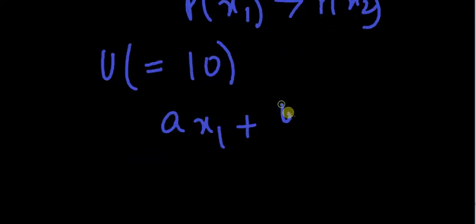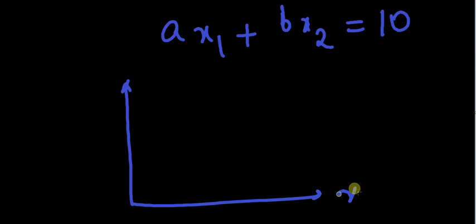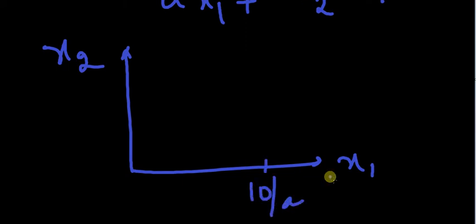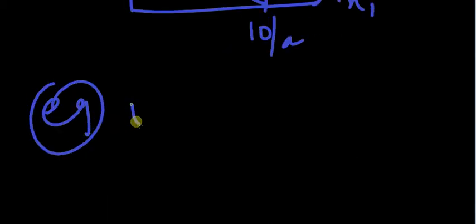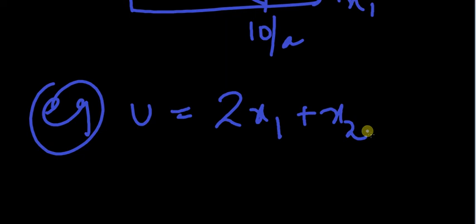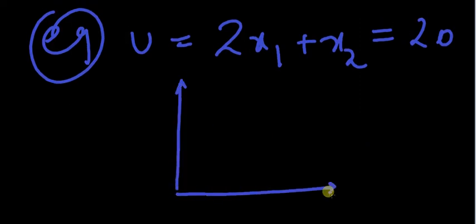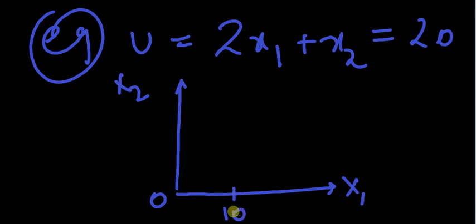Now let's talk about the shape of the indifference curve. Suppose utility is fixed at 10, so ax1 plus bx2 equals 10. Put x2 equal to 0, you get x1 equals 10 by a; put x1 equal to 0, x2 equals 10 by b. For example, with utility function 2x1 plus x2 fixed at 20: when x2 is 0, x1 is 10, and when x1 is 0, x2 is 20. That's your indifference curve.